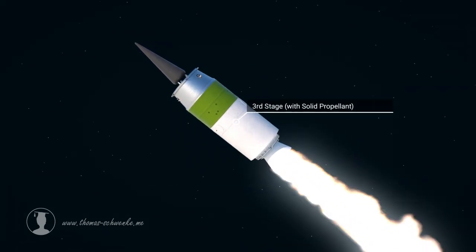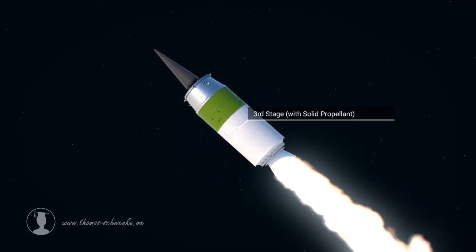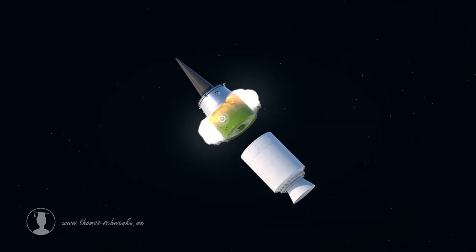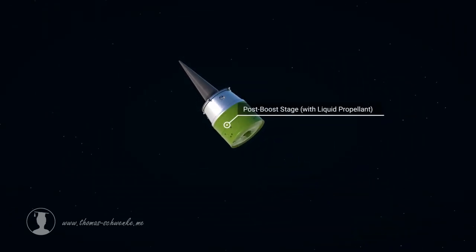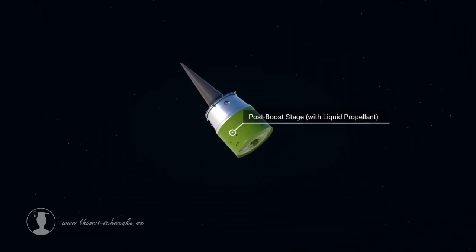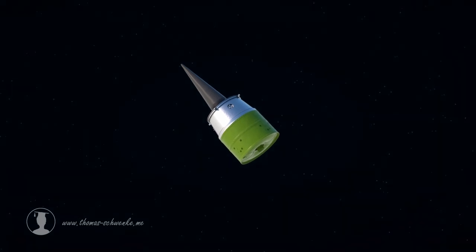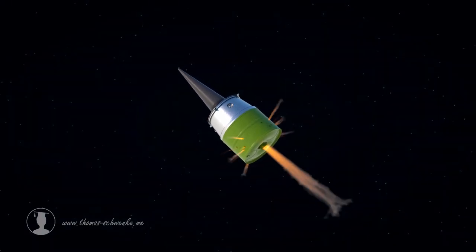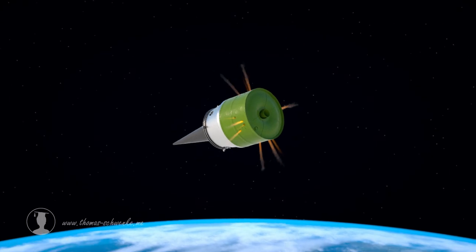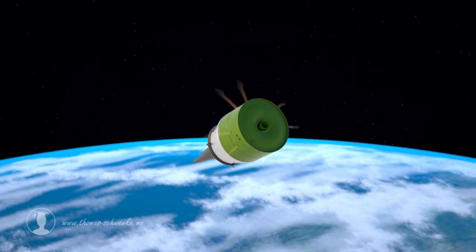The third stage finally increases the speed of the missile to over 16,000 miles per hour. The warhead and fourth stage are now in free flight. The fourth stage can increase the range if required and is used, among other things, to precisely aim at the target.